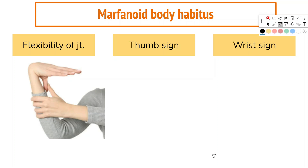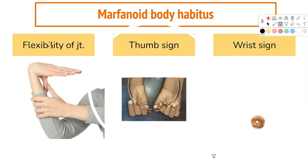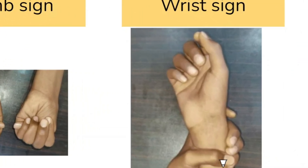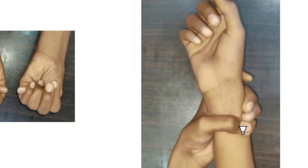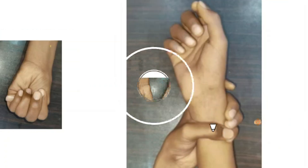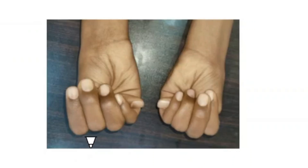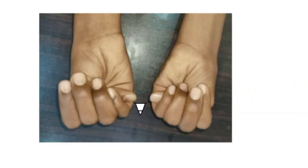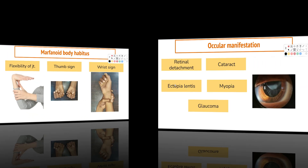Increased joint laxity combined with arachnodactyly can give rise to a couple of clinical signs. The wrist sign is positive when the distal phalanx of the thumb and the fifth finger overlap when the wrist is grasped with the opposite hand. The thumb sign is positive when the entire distal phalanx of the adducted thumb is visible beyond the ulnar border of the hand.